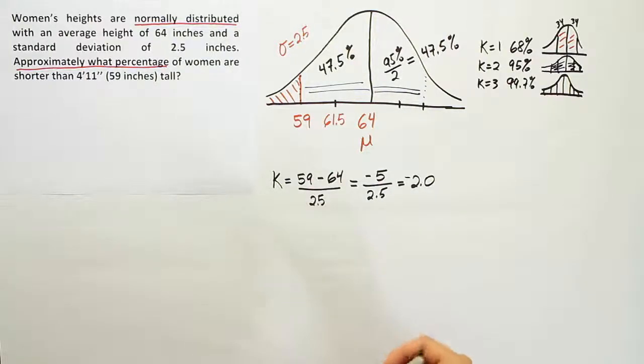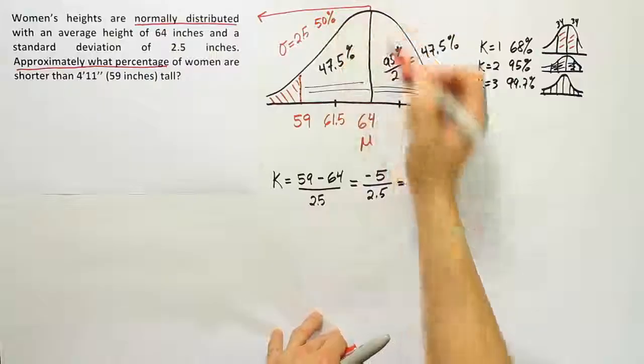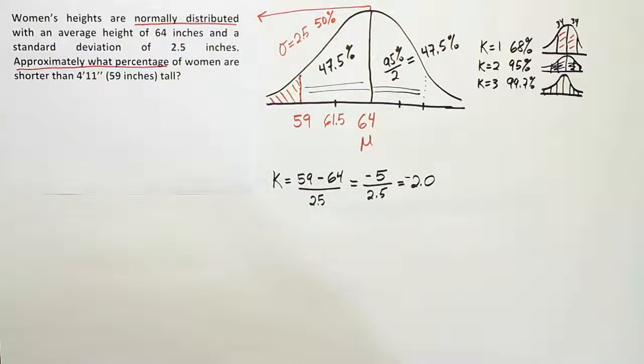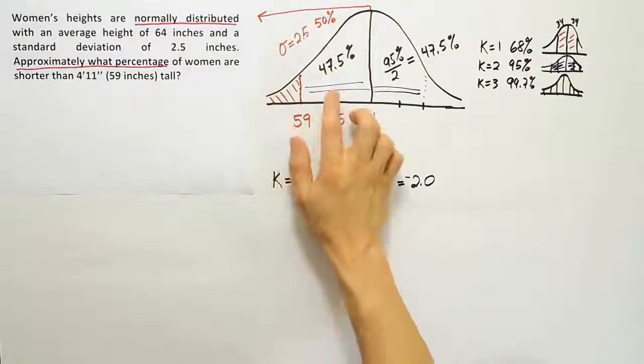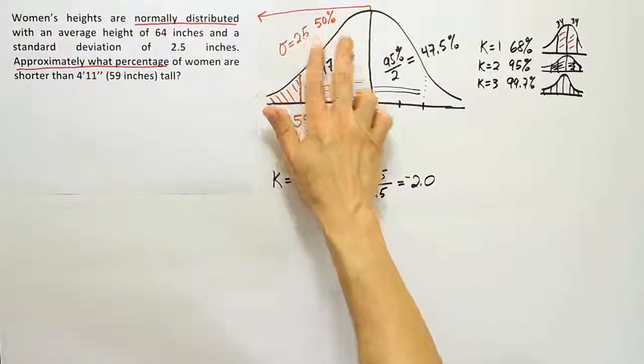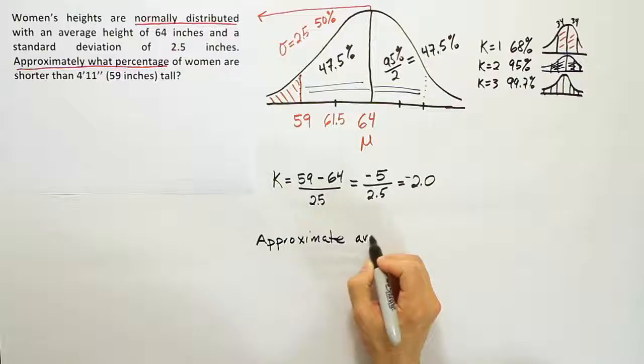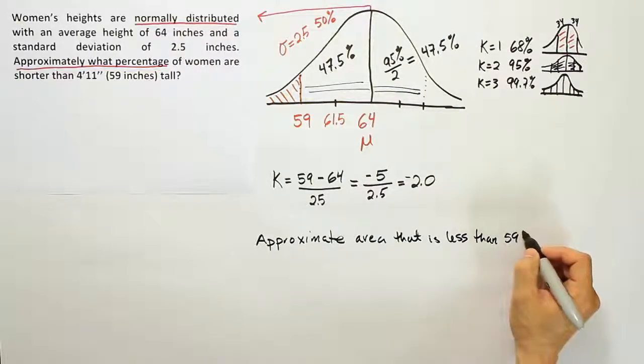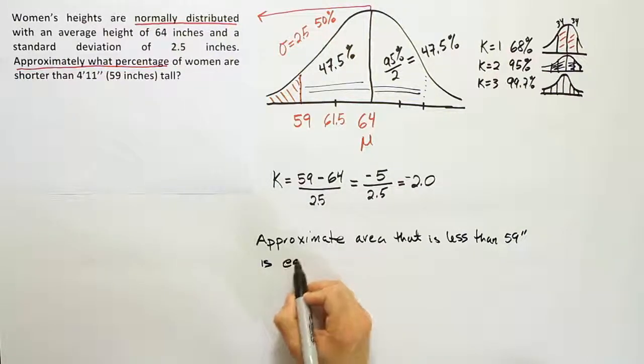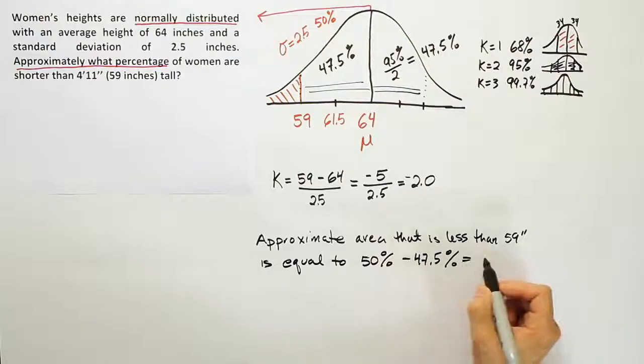The final way to think about it, and the way I think is probably most useful is to realize that, look, this half of the curve from here over, all the way over, must contain 50%. That must be true because it's half of the curve, from the mean over, it's half of the curve. So if that contains 50% of the data, and this amount is 47.5, then what must this be? Well, you can just subtract them because we know that this space plus this space adds up to 50. So if I take 50 and take away the 47.5, I will get two and a half percent. So that's going to be my final solution. The approximate area that is less than 59 inches is equal to 50% minus 47.5%. And of course, that's going to be 2.5%.